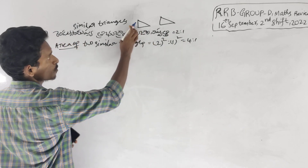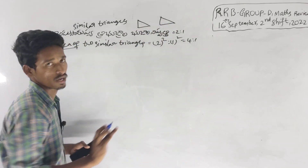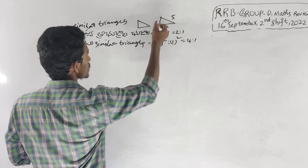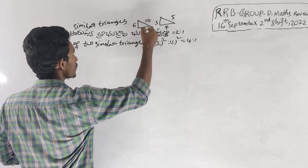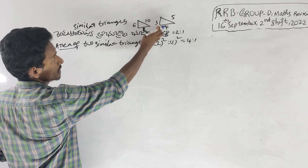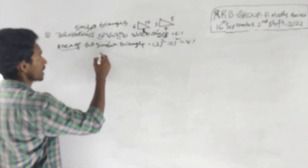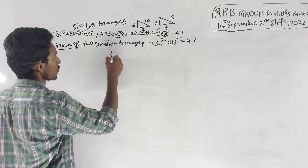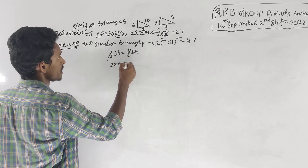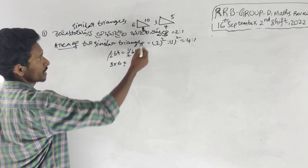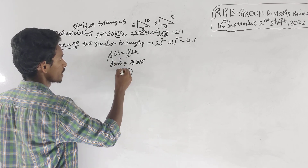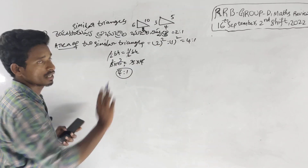For 2 similar triangles, the side ratio is 2 is to 1. I will show you a triangle: 3, 4, 5 here and 6, 8, 10 there. The ratio is 2 is to 1. Using the formula one-half BH for each triangle: 1/2 × 3 × 4 = 6 and 1/2 × 6 × 8 = 24. The area ratio is 4 is to 1.